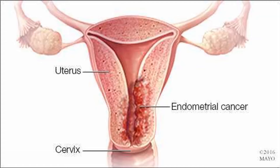The body of the uterus has two main layers. The myometrium is the outer layer — this thick layer of muscle is needed to push the baby out during birth. The endometrium is the inner layer. During a woman's menstrual cycle, hormones cause the endometrium to change. Estrogen causes the endometrium to thicken so that it can nourish an embryo if pregnancy occurs. If there is no pregnancy, estrogen is produced in lower amounts and more of the hormone called progesterone is made. This causes the endometrial lining to shed from the uterus and become the menstrual flow, or period. This cycle repeats until menopause. There is also a layer of tissue called the serosa, which coats the outside of the uterus.